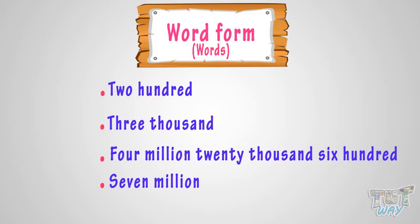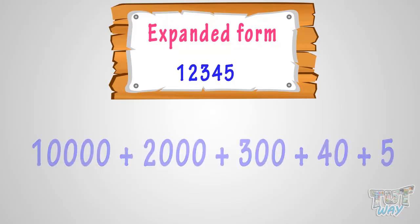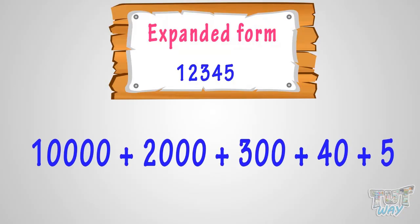Now let's see the third and last form — the expanded form. It is a way of expressing numbers as the sum of the place values of each digit. Let's learn it today!